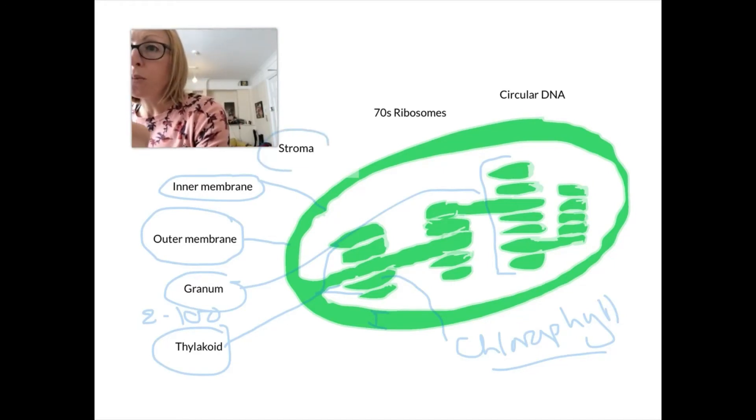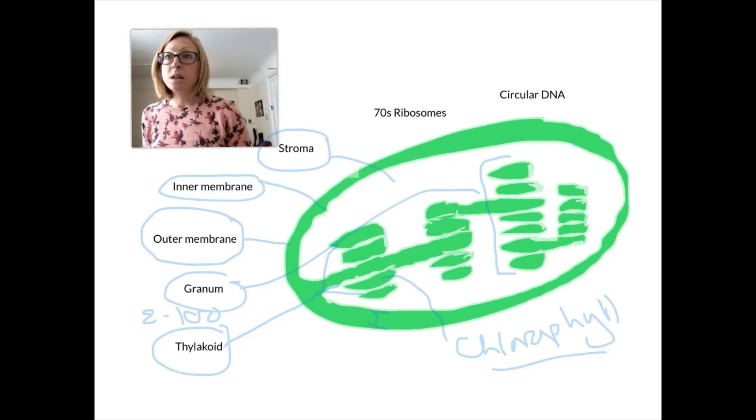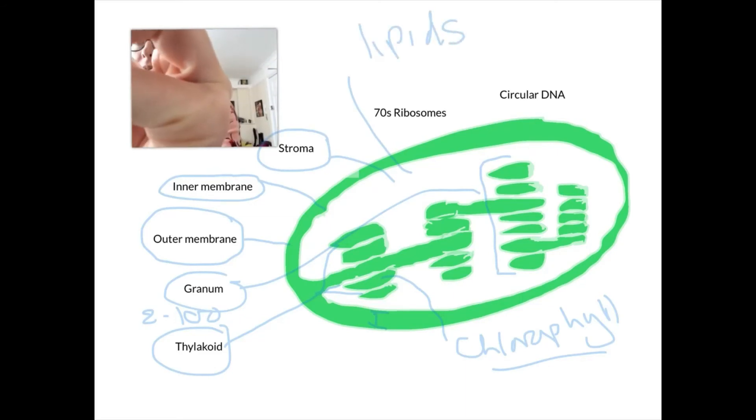The stroma is the jelly-like fluid inside the chloroplast. It might contain things like lipids and also starch, both of which are going to have been made in photosynthesis.